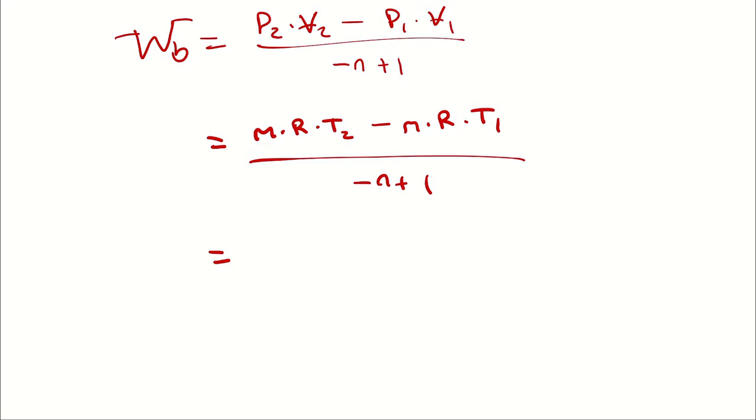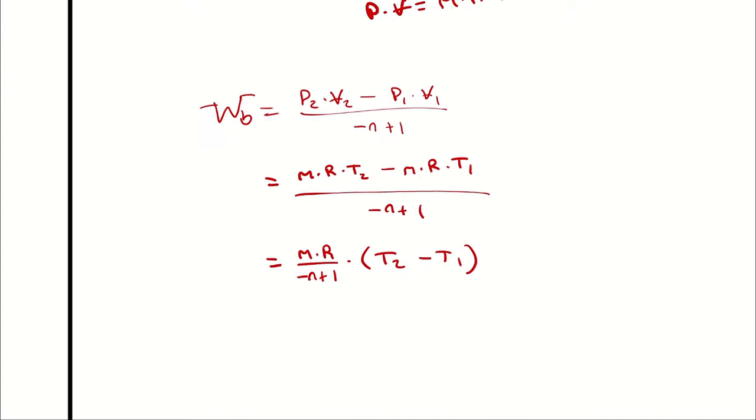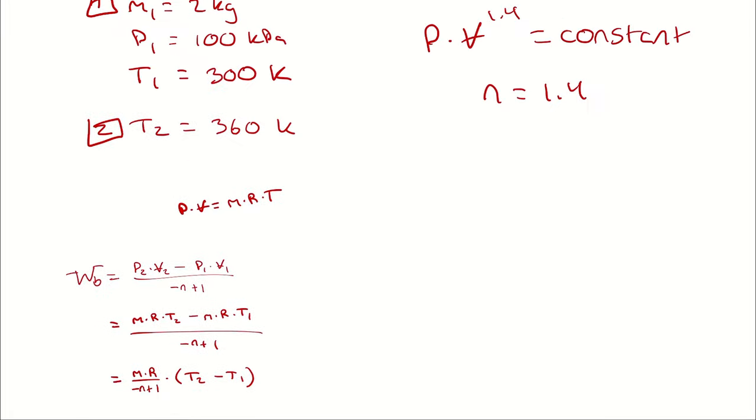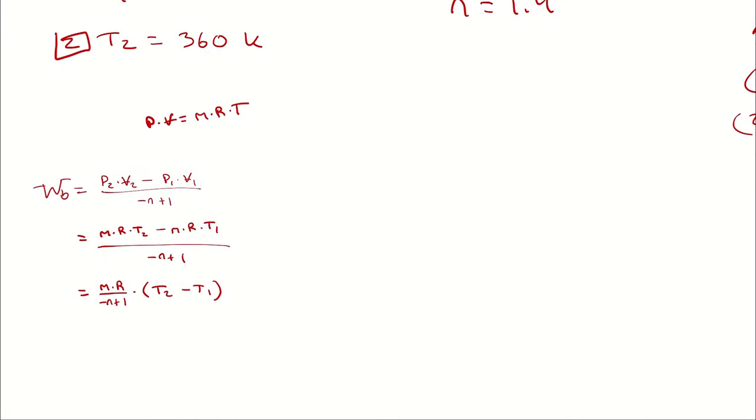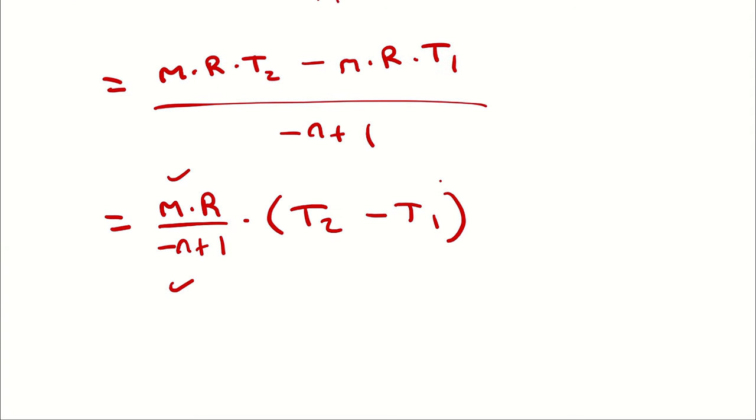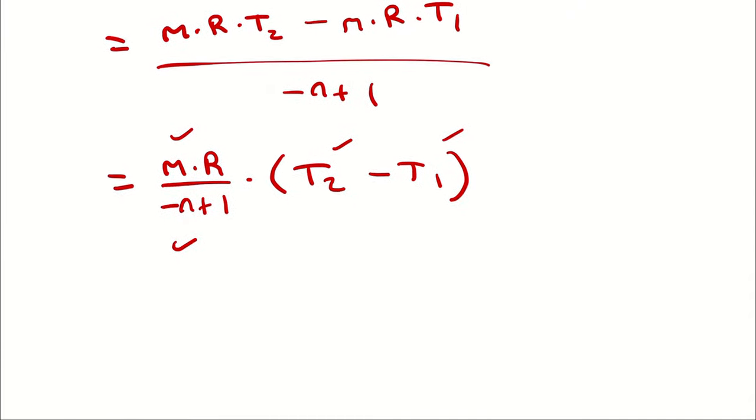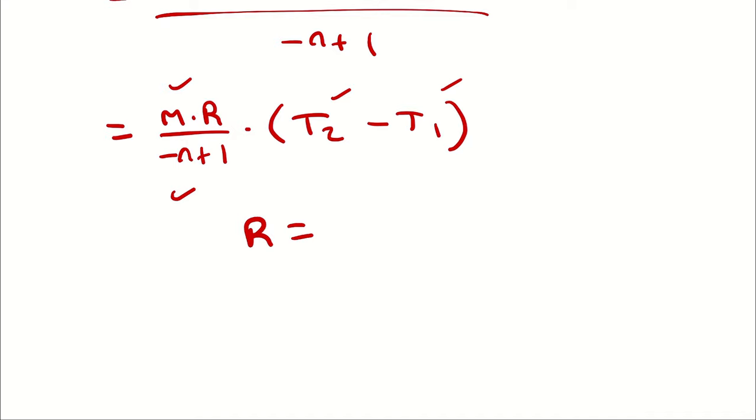Then I will factor out our mass and our gas constant. So mass times gas constant divided by negative N plus 1 times the quantity T2 minus T1. Now, what do we know about that process? We know the mass, we know the temperature at both state points, we know N. We have broken this from 5 steps down to 2 steps. All we need is the specific gas constant. The specific gas constant for nitrogen is going to be the universal gas constant divided by the molar mass for nitrogen.